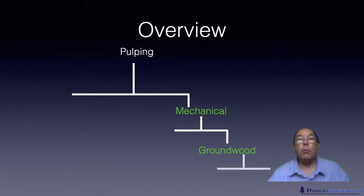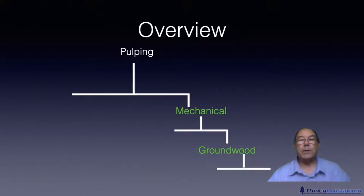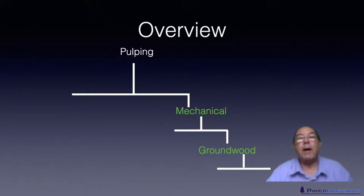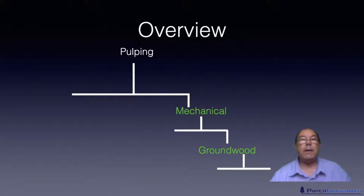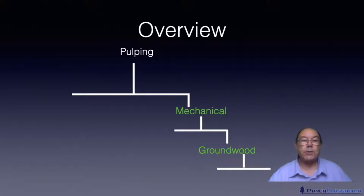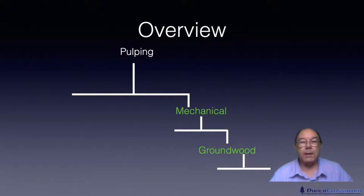One is ground wood pulping. With ground wood pulping you're dealing with the whole tree. You take the whole tree and press it against a grindstone under varying conditions. It was in Germany and in Canada that this idea came to fruition simultaneously but independently — both inventors made ground wood pulp and tried to sell it to a newsprint mill for making newsprint.